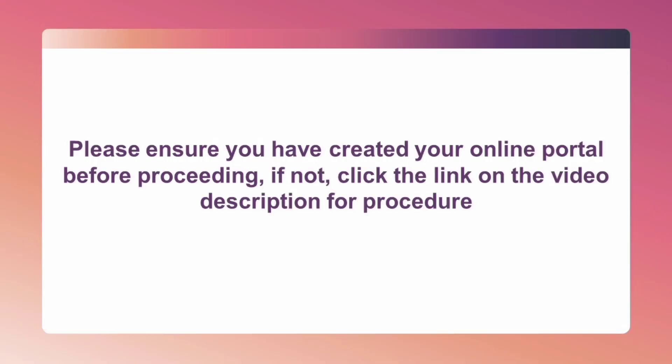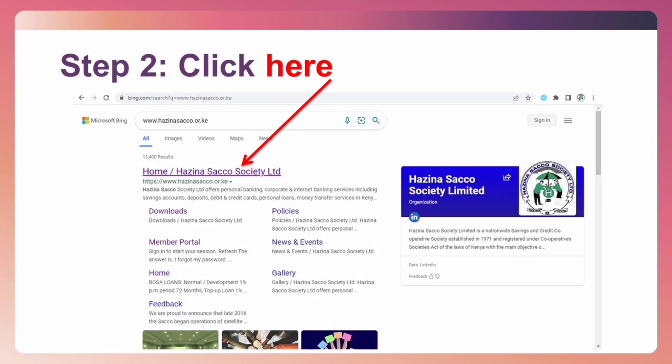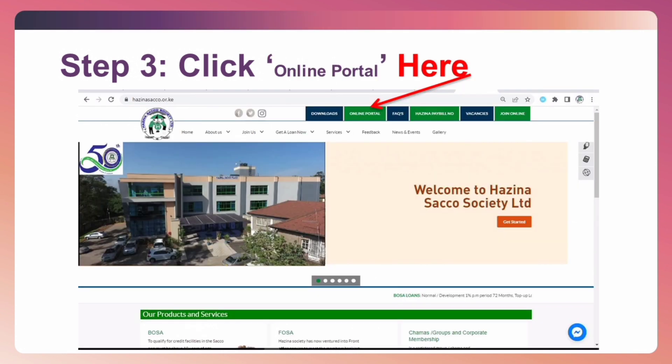Please ensure you have created your online portal before proceeding. If not, click the link in the video description for the procedure. Step 1: Open your browser and go to www.hasinasako.or.ke to access our website. Step 2: Click on Home. Step 3: